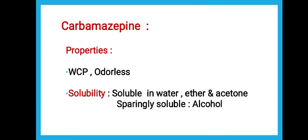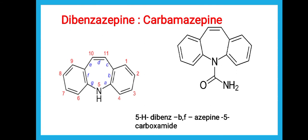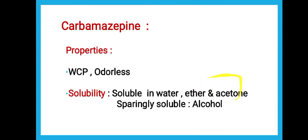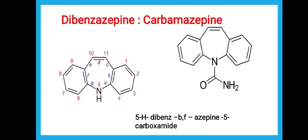So it is 5-carboxamide. Looking at the structure of carbamazepine, the nucleus is the same as that of tricyclic antidepressants. It has the 1st benzene ring, another benzene ring, the azepine ring, the 5th position nitrogen, and the carboxamide group. So the full name is 5H-dibenz[B,F]azepine-5-carboxamide — that is carbamazepine. This covers the IUPAC name and structure of carbamazepine.